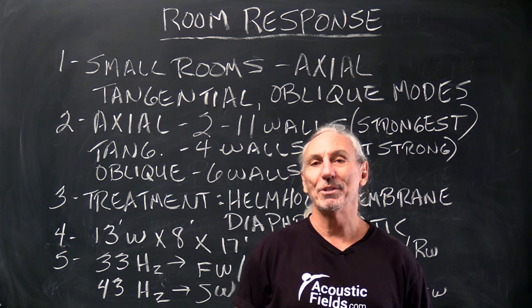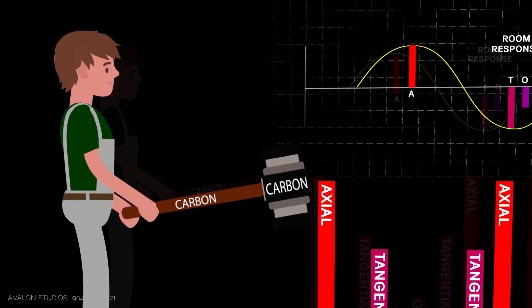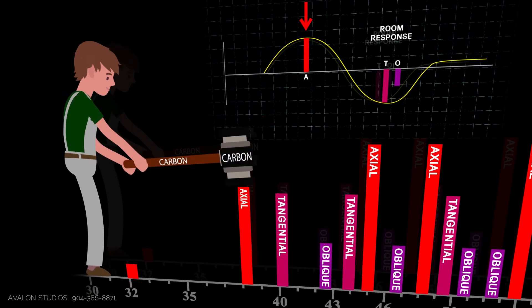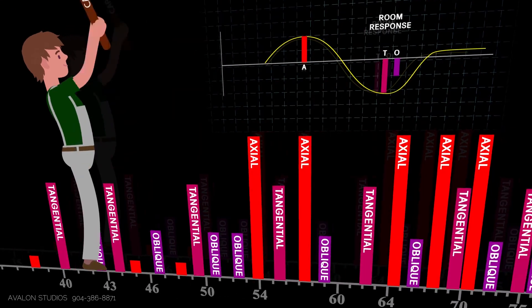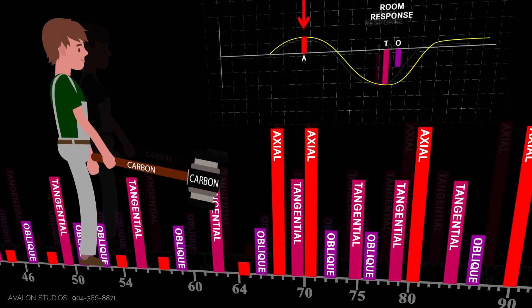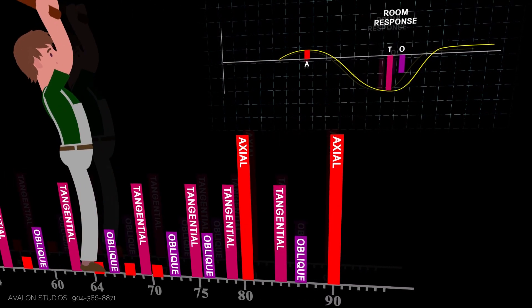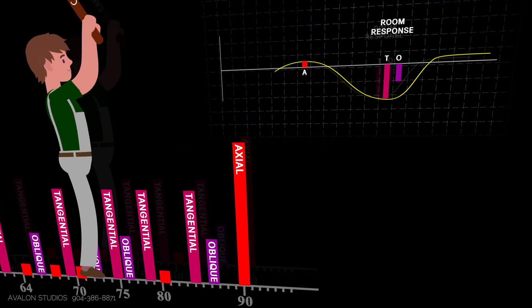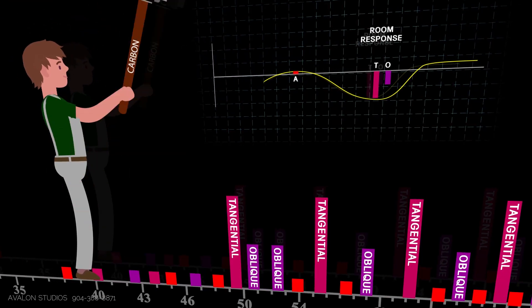Hi everyone, Dennis Foley from Acoustic Fields. Today we're going to talk about this animation that you're looking at. I tried to come up with a way to help you understand the three major modal problems in small rooms because this is the arena we work in. We work in small rooms so we're going to have axial, tangential and oblique modes in these rooms. Now what are they?